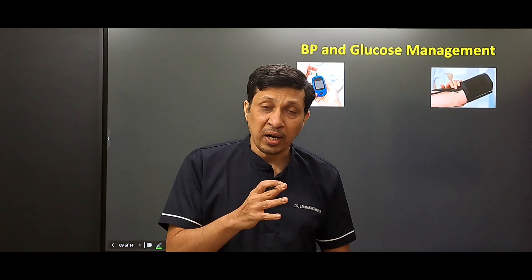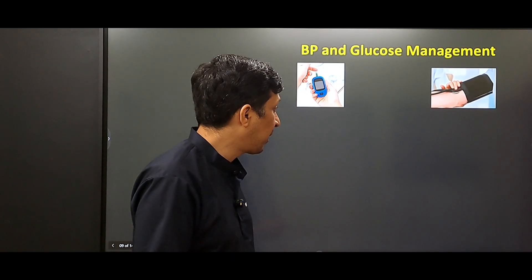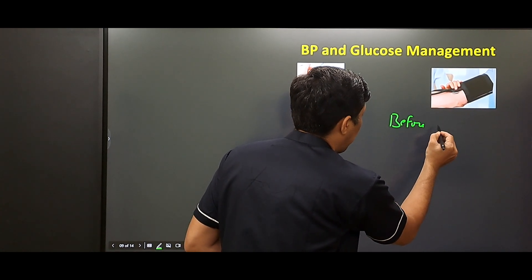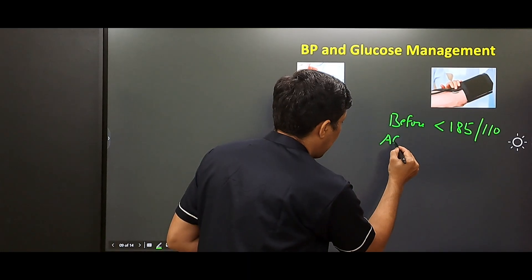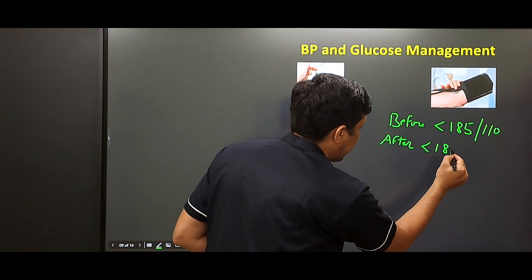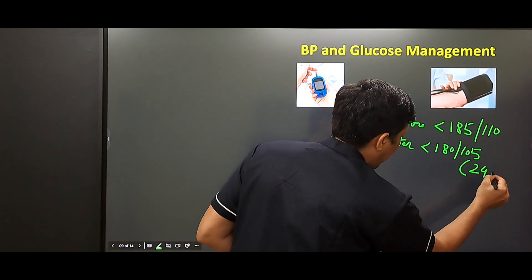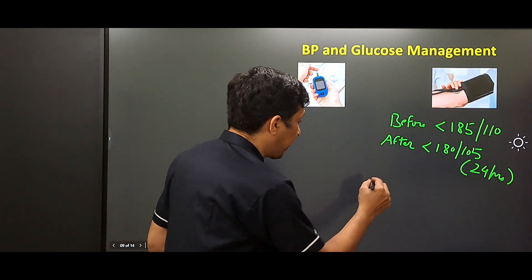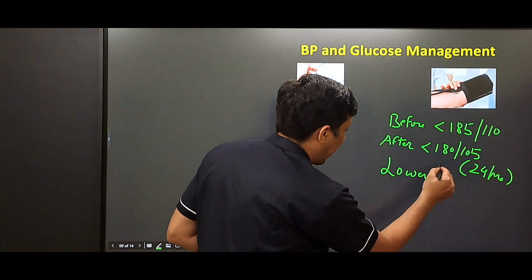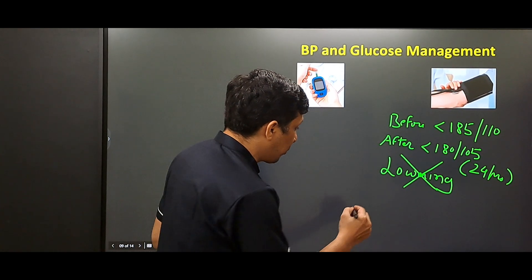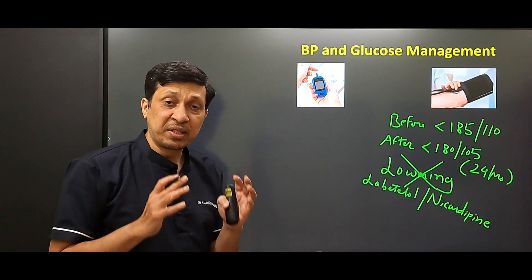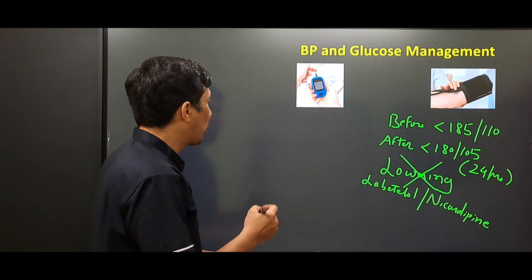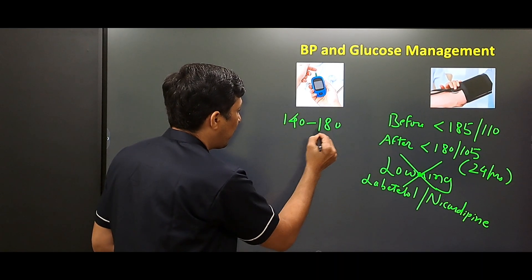Regarding blood pressure and glucose management during thrombolysis: before thrombolysis, BP should be less than 185/110. After thrombolysis, BP should be maintained below 180/105 for at least 24 hours, and aggressive lowering should be avoided. Labetalol or nicardipine can be used to control BP. Glucose should be maintained between 140 and 180, avoiding extremes.